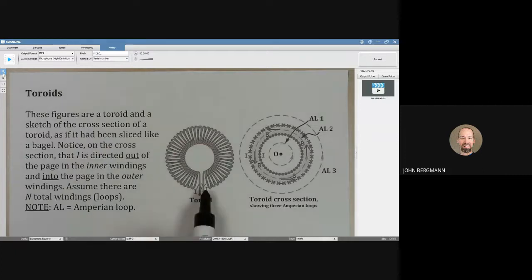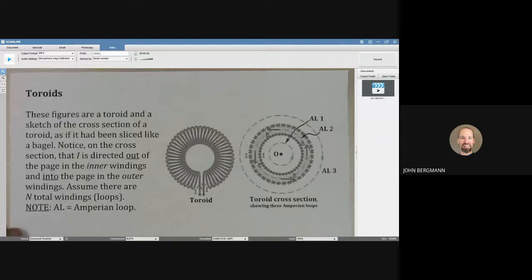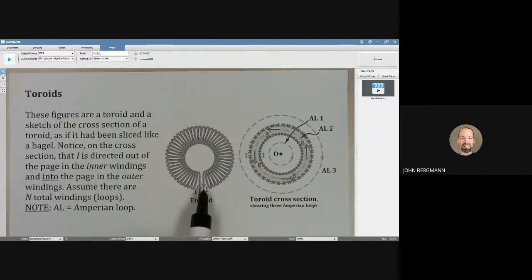You can see that a toroid is basically just a solenoid where the ends have been twisted around and are touching each other.